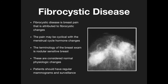Rapid growth increases suspicion for a phyllodes tumor, which is usually seen in younger individuals. Fibrocystic breast disease is breast pain attributed to fibrocystic changes. The pain may be cyclical with the menstrual cycle or hormonal changes. The breast is described as nodular and sensitive, considered normal physiologic changes. Patients should have regular mammograms and surveillance.